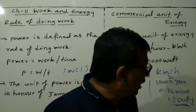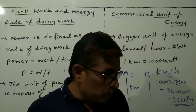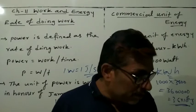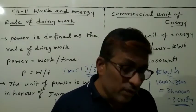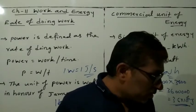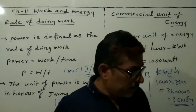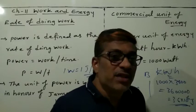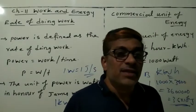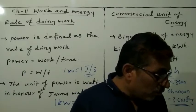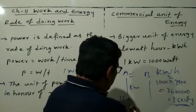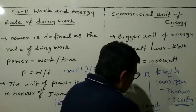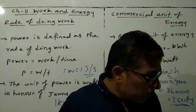One kWh is equal to 3.6 × 10^6 joules. The energy used in industrial and household establishments is usually expressed in kilowatt hours. For example, electrical energy consumed during a month is expressed in units, where one unit is equal to one kilowatt hour.